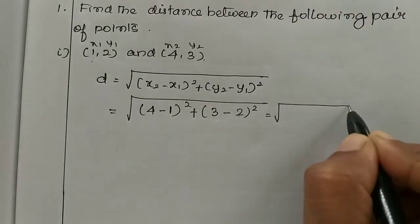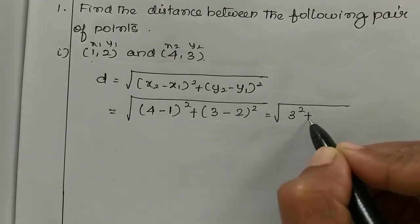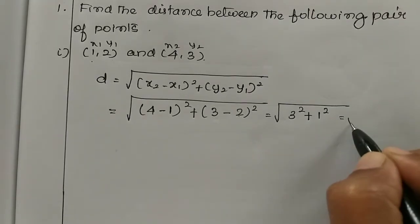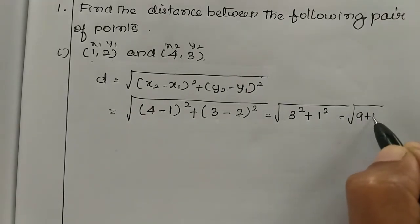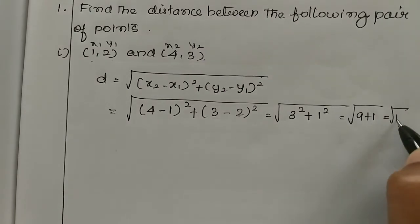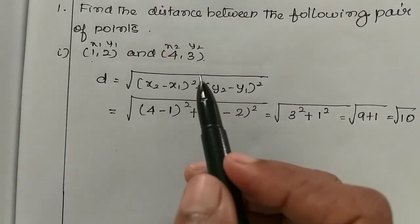Which is equal to (4 minus 1) is 3 square plus (3 minus 2) is 1 square. So 9 plus 1 which is equal to root 10. So root 10 distance between these two points.